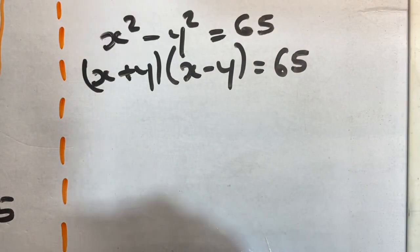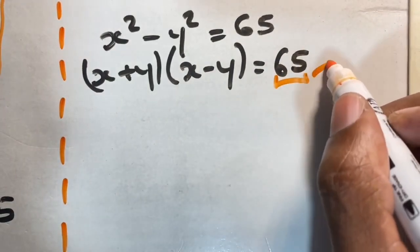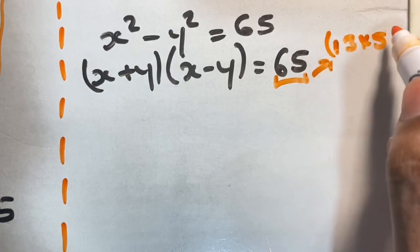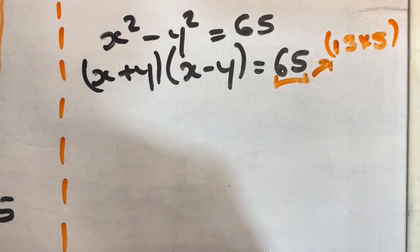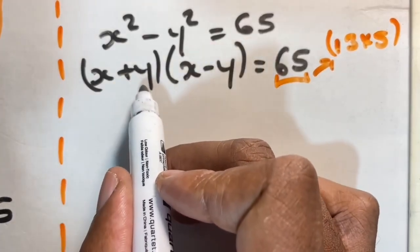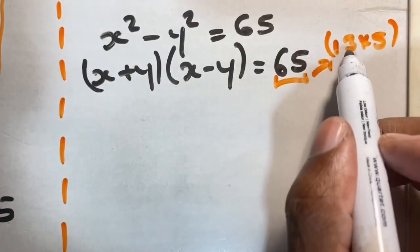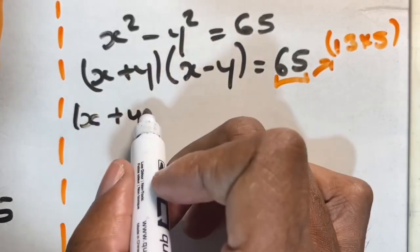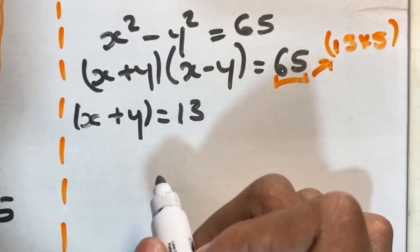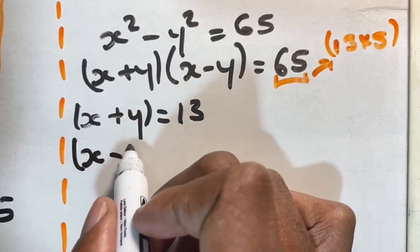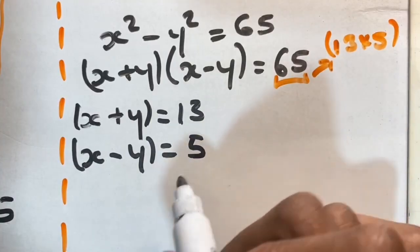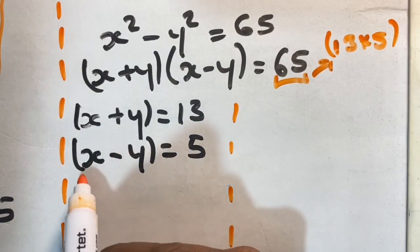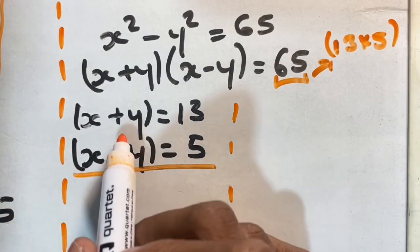Now we can look at 65 and find its factors — two numbers multiplied together to give 65. Those numbers are 13 and 5, since 13 times 5 gives us 65. One of the brackets is going to equal 13 and the other is going to equal 5. We assign the positive larger value to the first bracket, so x plus y is equal to 13, and x minus y is equal to 5. It is more logical to have x plus y equal to 13 and x minus y equal to 5 since 5 is less than 13.